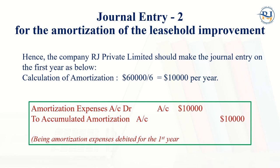The company RJ Private Limited should make a general entry on the first year as follows. Calculation of amortization: sixty thousand dollars divided by six years equals ten thousand dollars per year as amortization. The general entry is: Amortization Expense account — debit ten thousand; Accumulated Amortization account — credit ten thousand, being amortization expense debited for the first year.